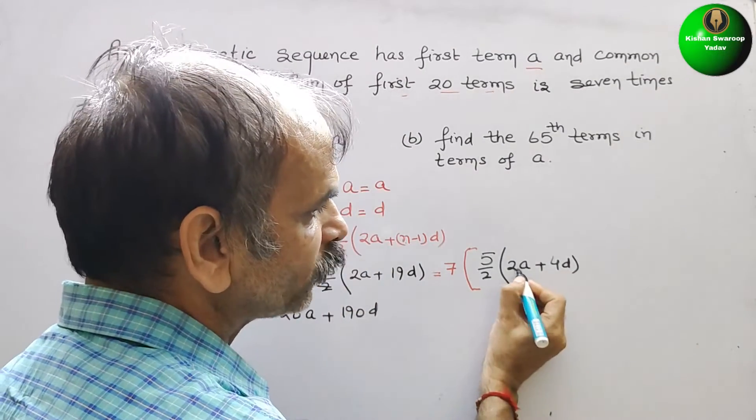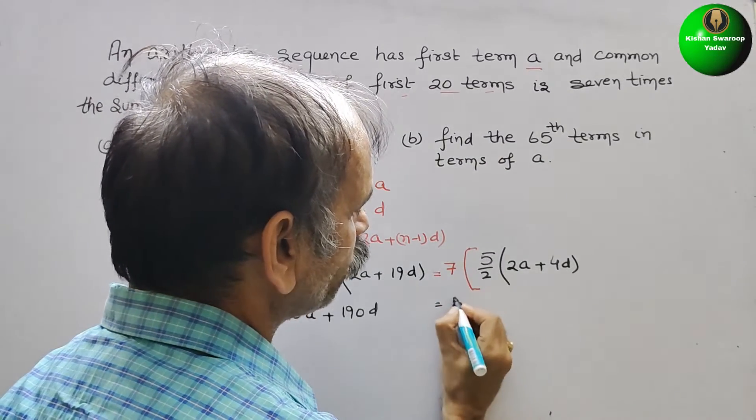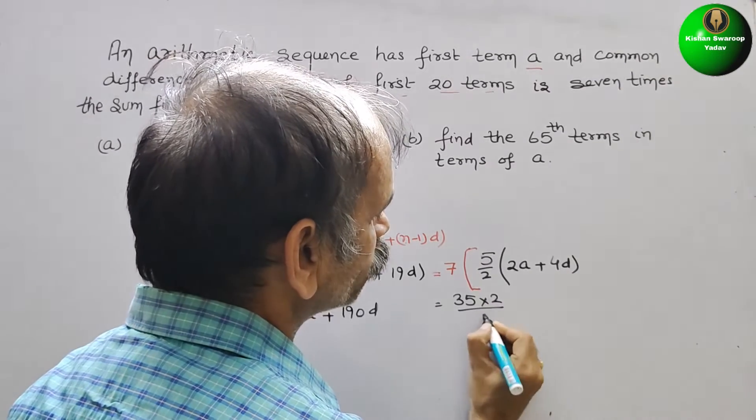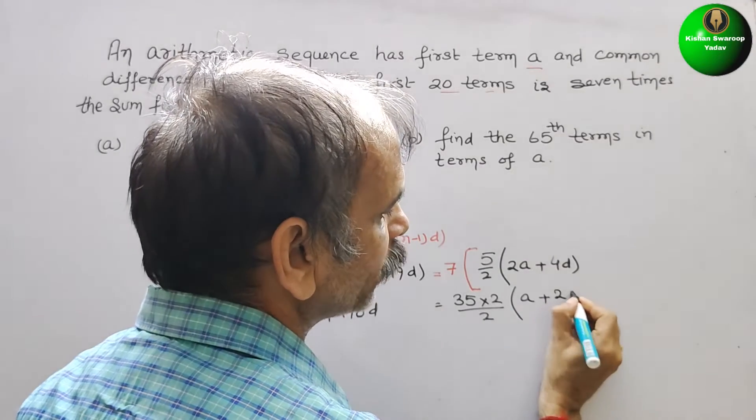So here if you see 2 is common, so we will take it out. So here comes 7 into 5 is 35 into 2 by 2, and here it will be A plus 2D.